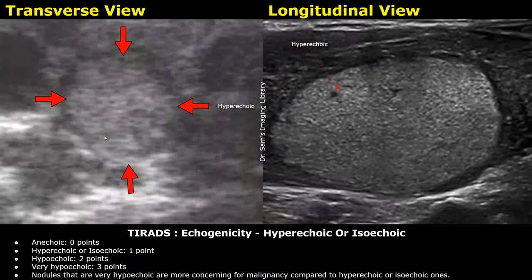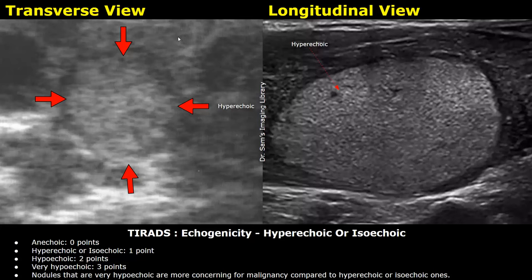Hyperechoic or isoechoic echogenicity is given one point. A hyperechoic nodule has greater echogenicity than the normal thyroid parenchyma — it appears brighter than the thyroid tissue. This echogenicity category is given one point.